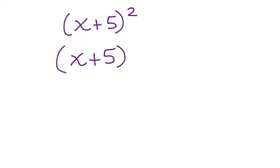x plus 5 times x plus 5. Begin by multiplying the first terms. x times x is x squared.